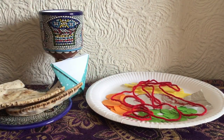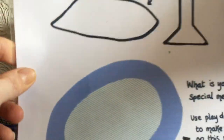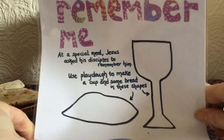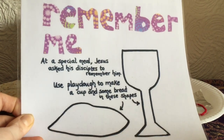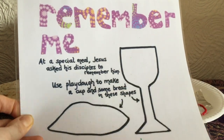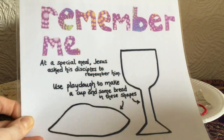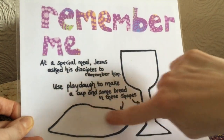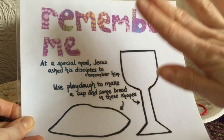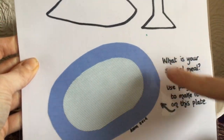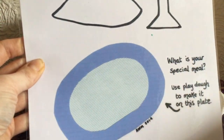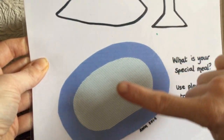And another thing is a play-doh mat — I'll give you the link to the play-doh mat. The play-doh mat essentially uses play-doh to fill in the blanks to make a cup and some bread. And there's a plate there that you can use your play-doh to make a special meal on.